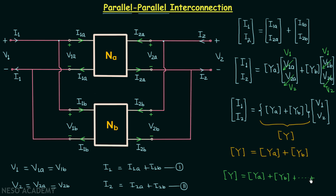This is the result for N two-port networks connected in parallel-parallel connection. Using matrix addition, we can find all four Y parameters of the overall network. That is all for this lecture. If you have any doubts, you may ask in the comment section. See you in the next one.